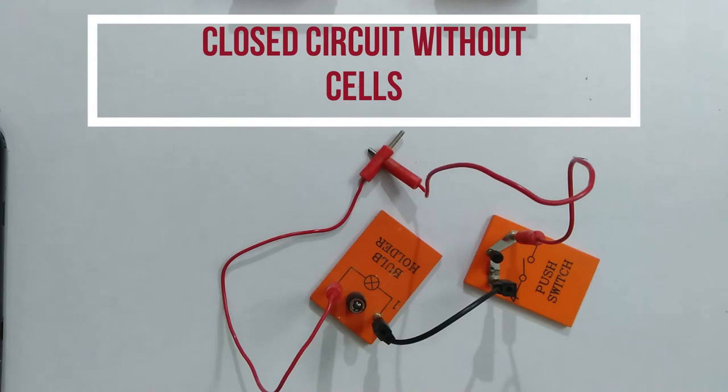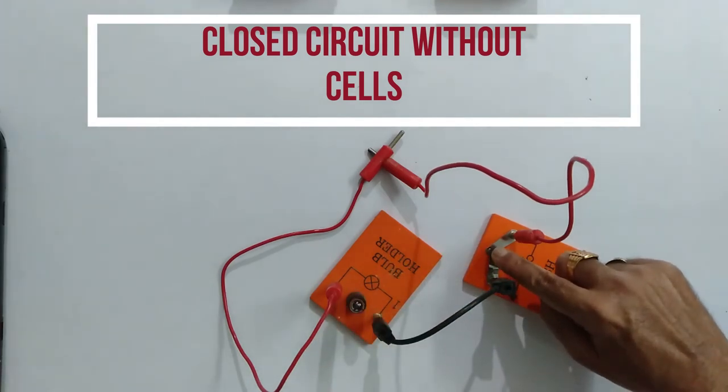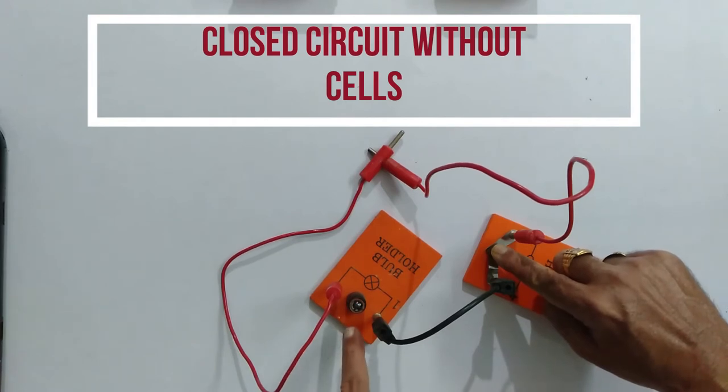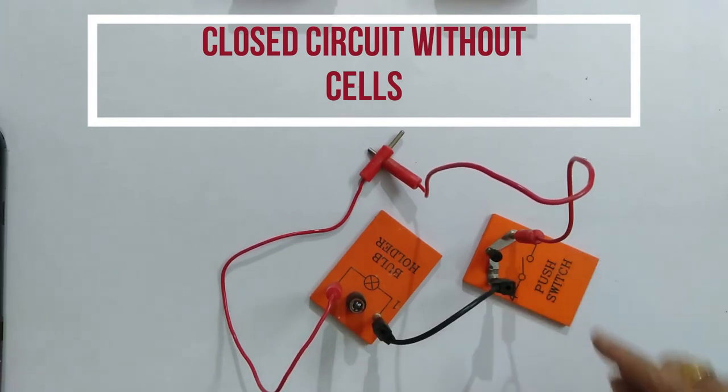In activity one, we have taken two cells and we connected a bulb and then a switch. When we push the switch, then the bulb was glowed. Now when we remove the cells and after completion of this circuit, if I push this switch, then you can see that the bulb is not glowed.